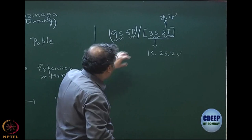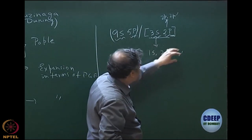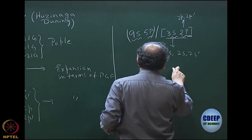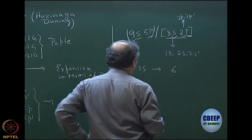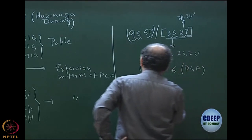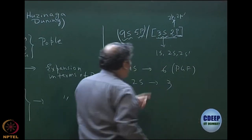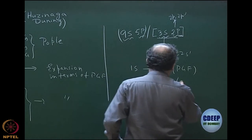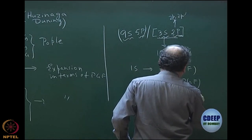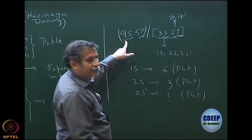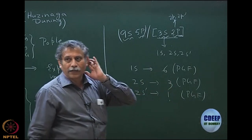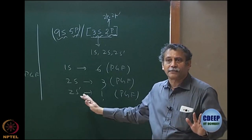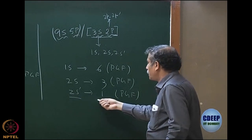The three s-type contracted functions are 1s, 2s, and 2s prime, and the two p-type are 2p and 2p prime. Note that 3 and 2 here are not principal quantum numbers — they are just the total number of contracted functions. Out of the 9 s-type primitives, typically 6 are used for 1s, 3 for 2s (with one shared), and 2s prime is usually uncontracted — just 1 PGF. Similarly, 5p is contracted as 4 plus 1 for 2p and 2p prime.